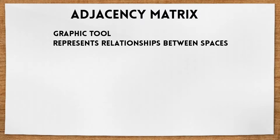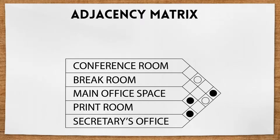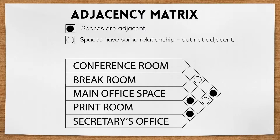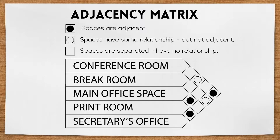It'll typically look something like this. You'll see a list of rooms or spaces within the project, and the dots indicate the relationship between them. A shaded dot indicates that the two spaces should be adjacent to one another. An open dot indicates the spaces should have some relationship but do not need to be adjacent. And no dot at all indicates that the spaces should be separated or have no relationship at all.